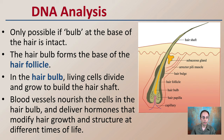DNA analysis is only possible if the bulb at the base of the hair is intact. Keep in mind that bulb region is down here, closer to the root end of the hair. The hair bulb forms at the base of the hair follicle, and in the hair bulb, living cells divide and grow to build the hair shaft.